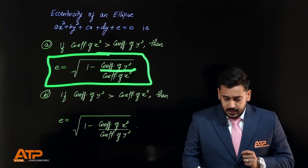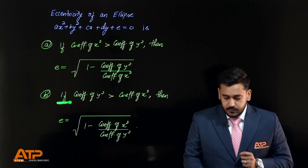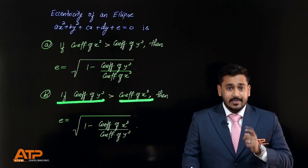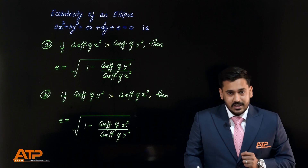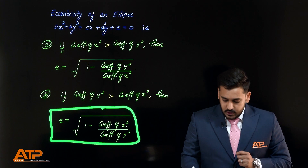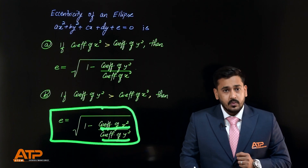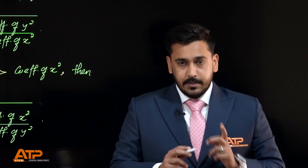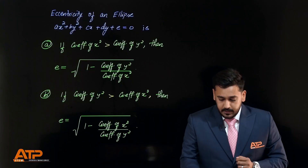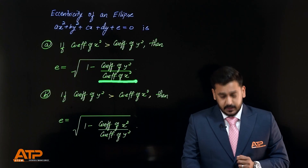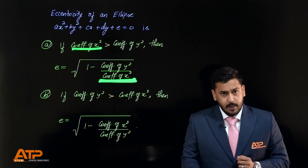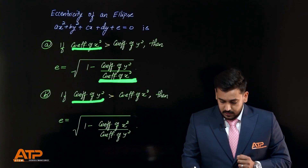If the coefficient of y² is more than the coefficient of x², then eccentricity will be the square root of one minus (coefficient of x²) over (coefficient of y²). Remember: whichever coefficient is larger goes in the denominator. If coefficient of x² is more, it goes in the denominator; if coefficient of y² is more, it goes in the denominator.